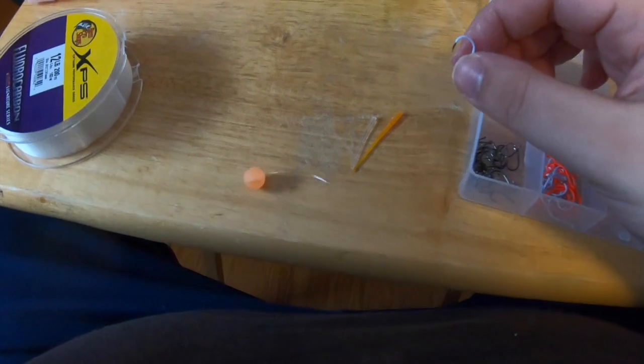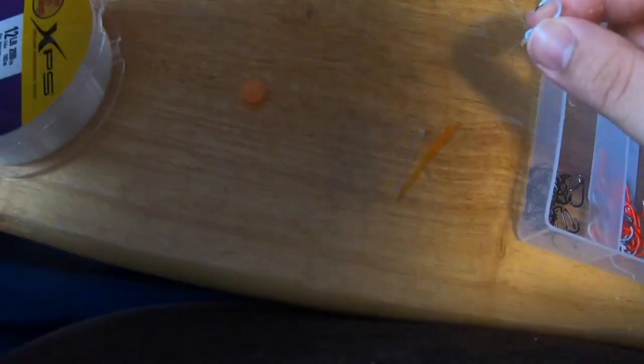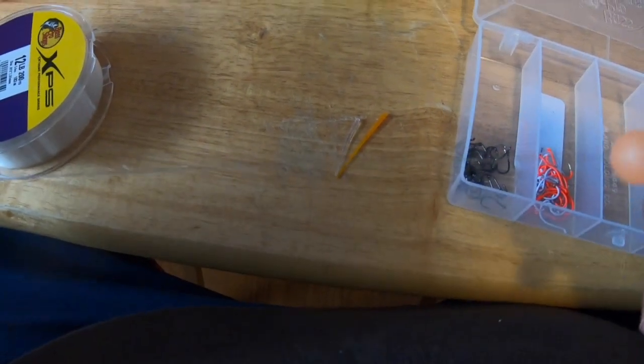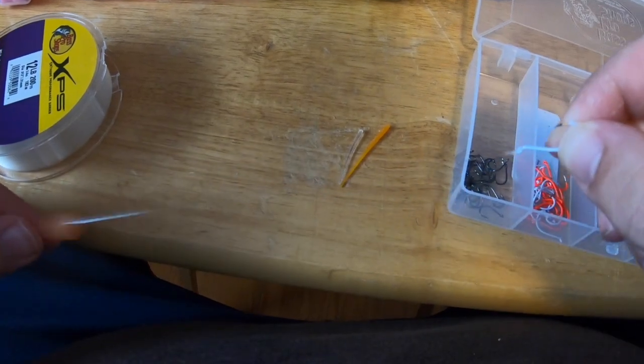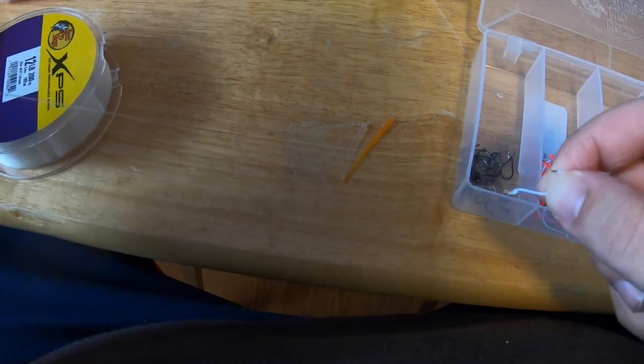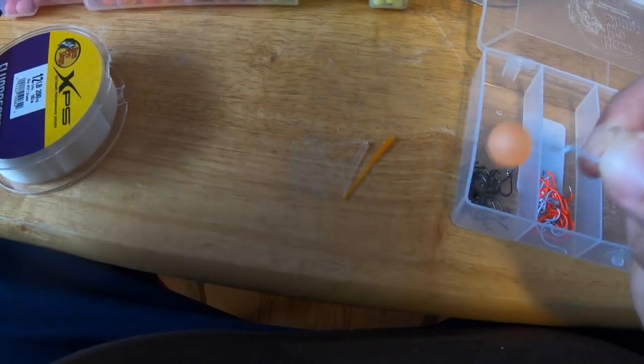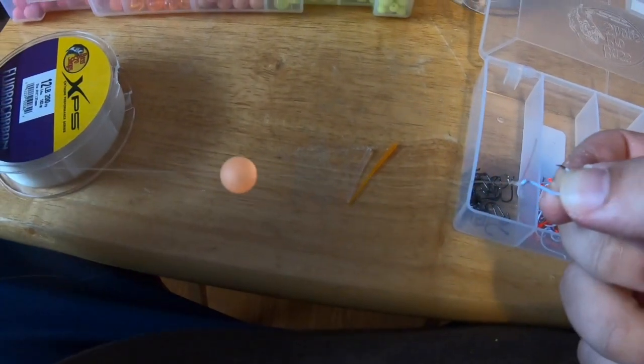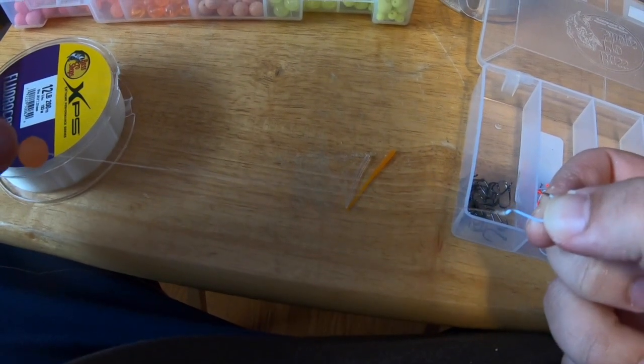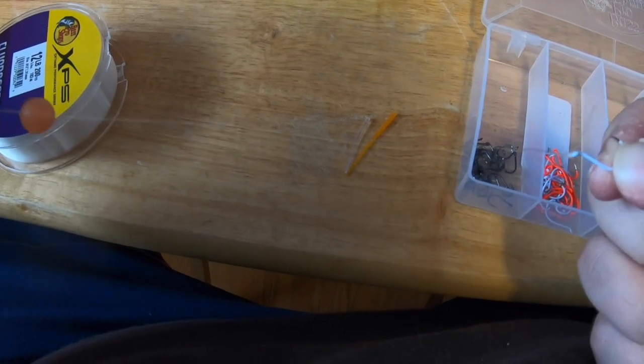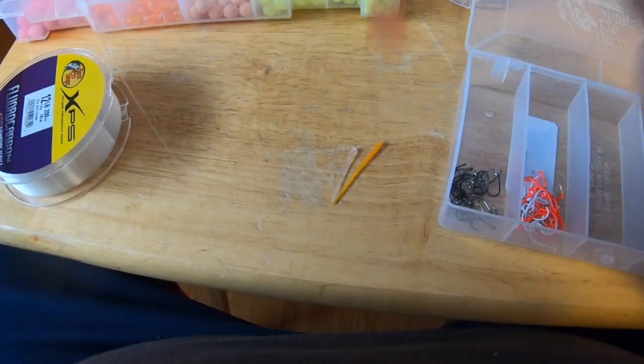And there you have that. So then when all said and done there, you're going to have this down here like that. So as you can see, the bead is freely moving. Now we don't want that obviously, because if your bead is all the way up there away from the hook, you're obviously not going to get the fish because the hook's all the way back here, or you're going to snag them. So that is where your little bead stoppers come in.